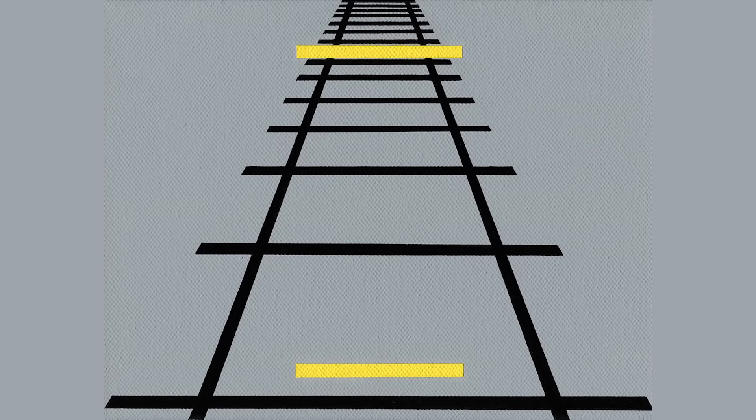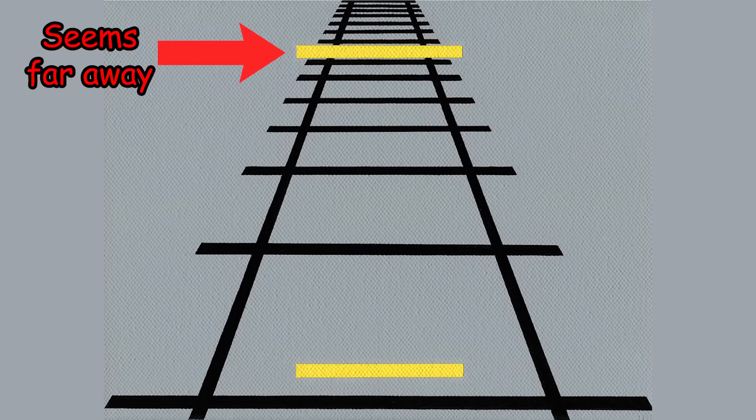Ponzo Illusion. The upper line looks longer because we interpret the upper part as receding into the distance. This is caused by the same mechanism that makes us perceive 2D images as 3D ones.